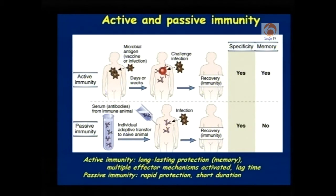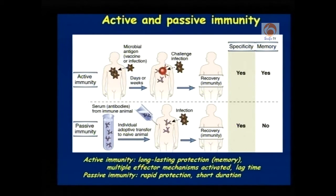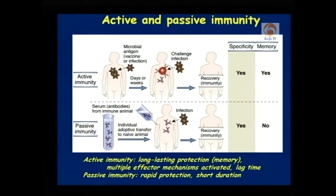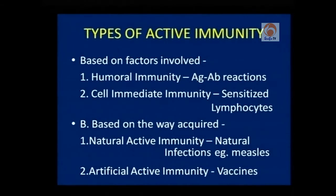When there is antibody production, immunity is said to be active — this is almost specific for each antigen to which we are exposed, and it generates immune memory. Passive immunity is a case where there is no antibody production inside the body. It is also specific but passive immunity does not generate immune memory. Active immunity can be categorized into different types: based on factors involved, it is of two types — humoral immunity and cell-mediated immunity.